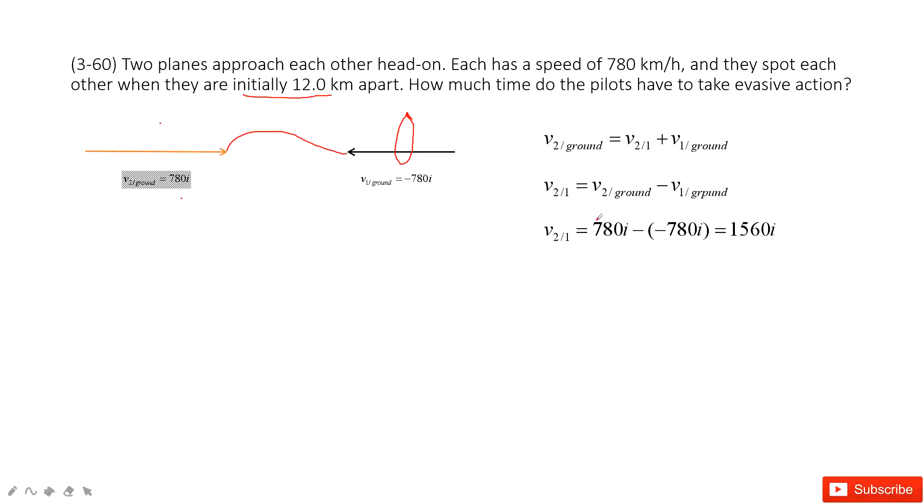And then we input the numbers. We find this is also i, this is i. In this case, the velocity of airplane 2 to airplane 1 is just twice, doubled.